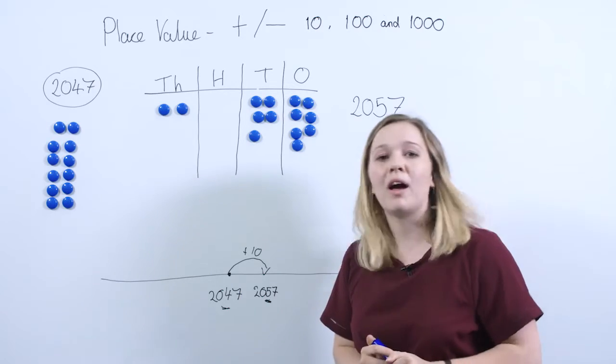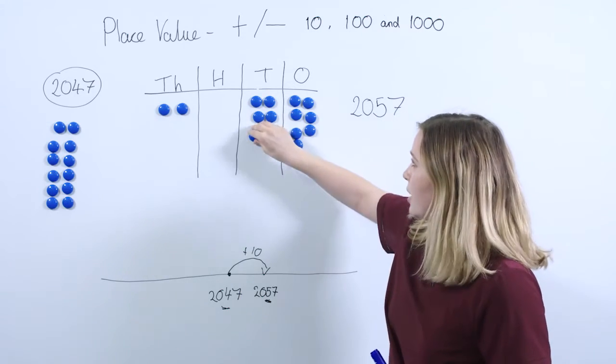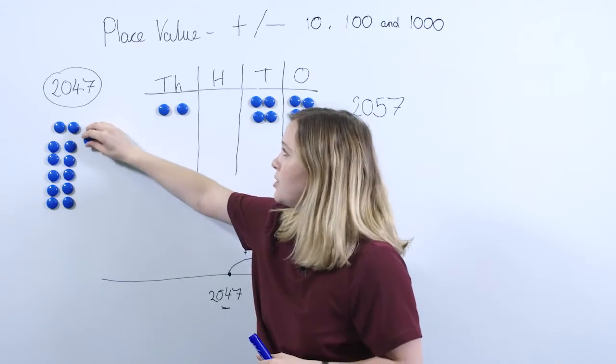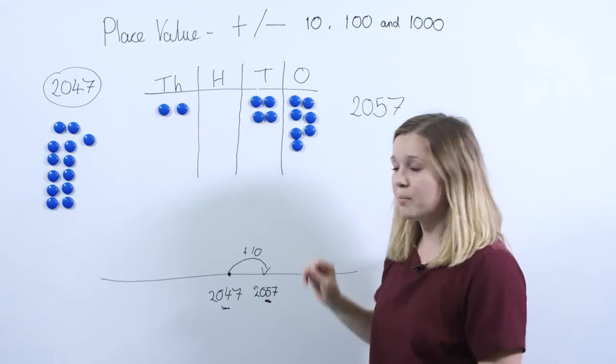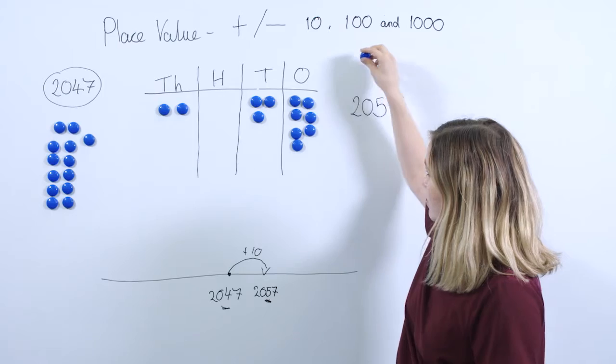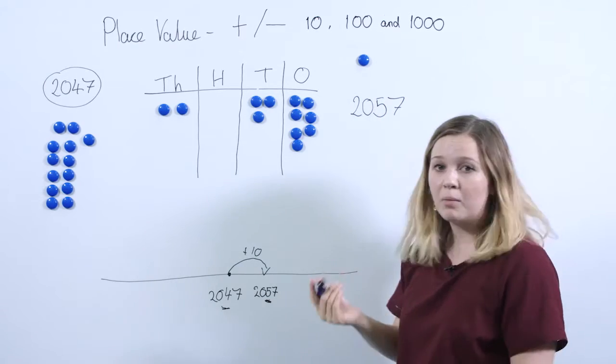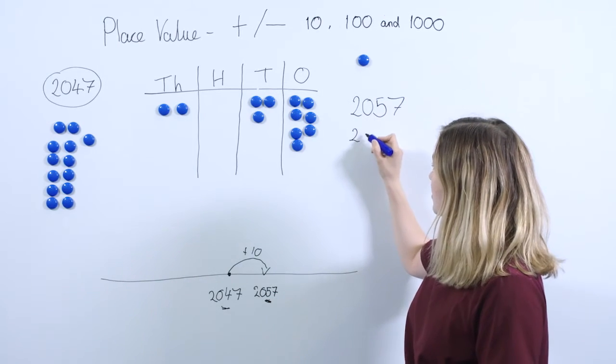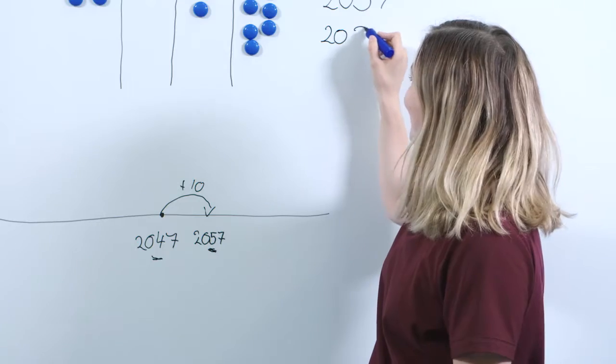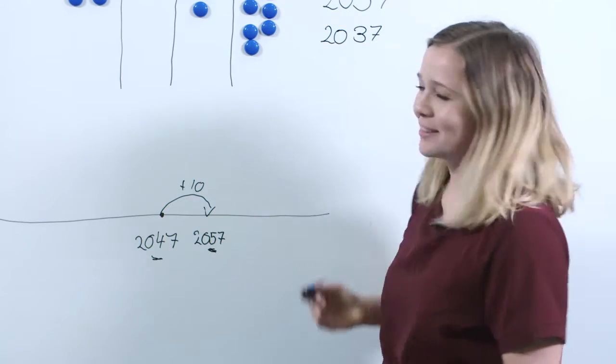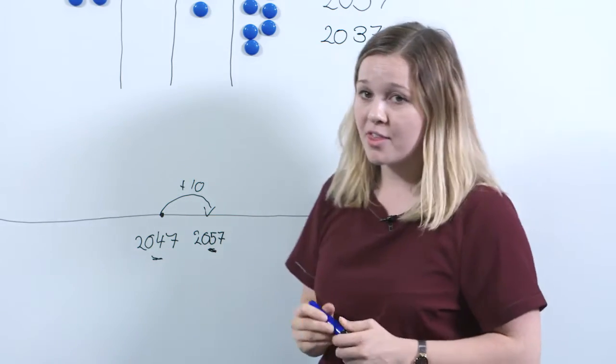The next thing we're going to do is look at what happens when we subtract 10. I'm going to go back and start with our number 2047, but this time we're taking away one 10. So we remove a 10 from our tens column, which means that we've got 2 thousands, zero hundreds, three tens, and seven ones. So now we've got 2037.